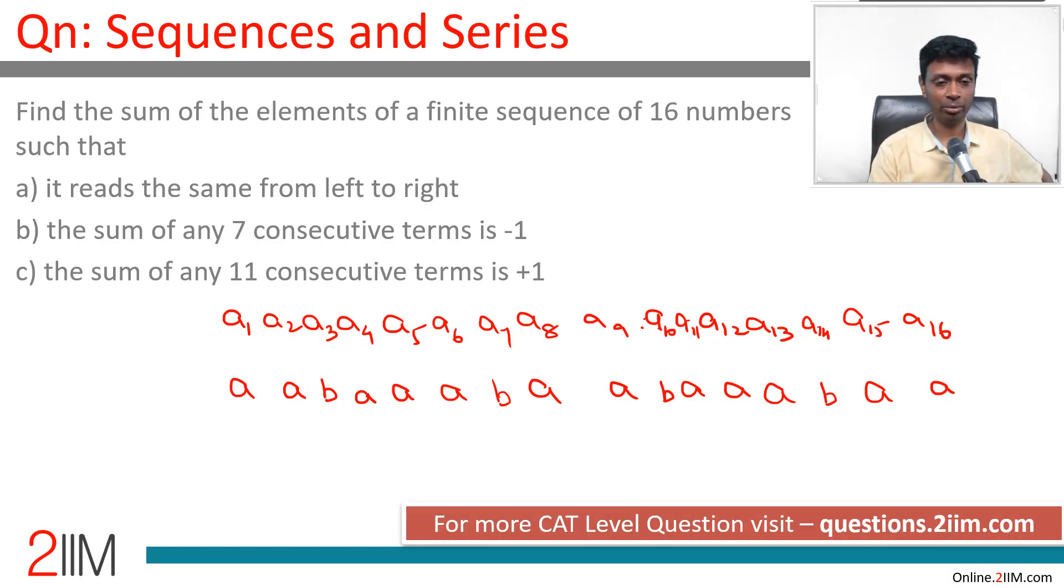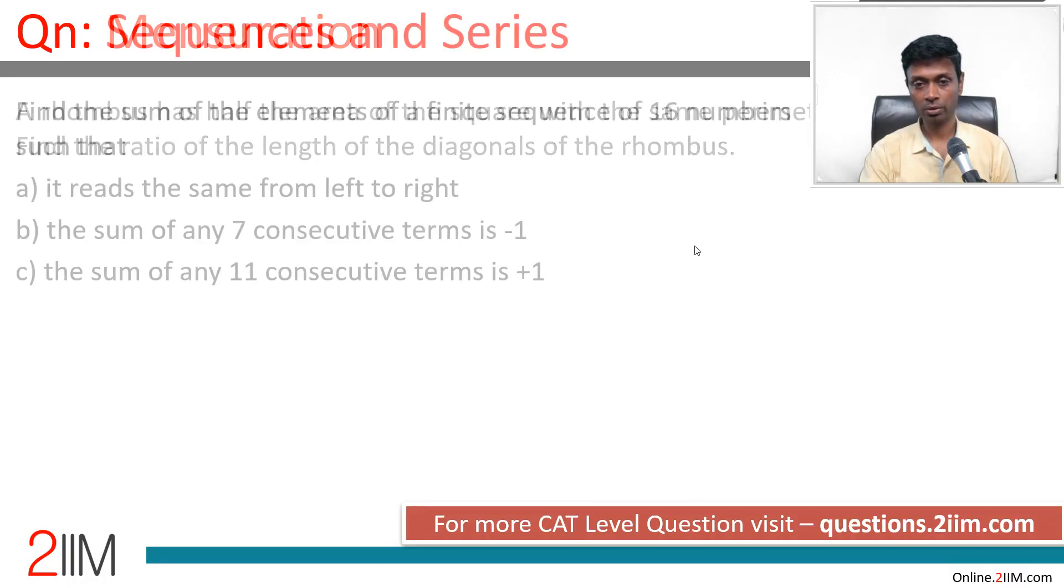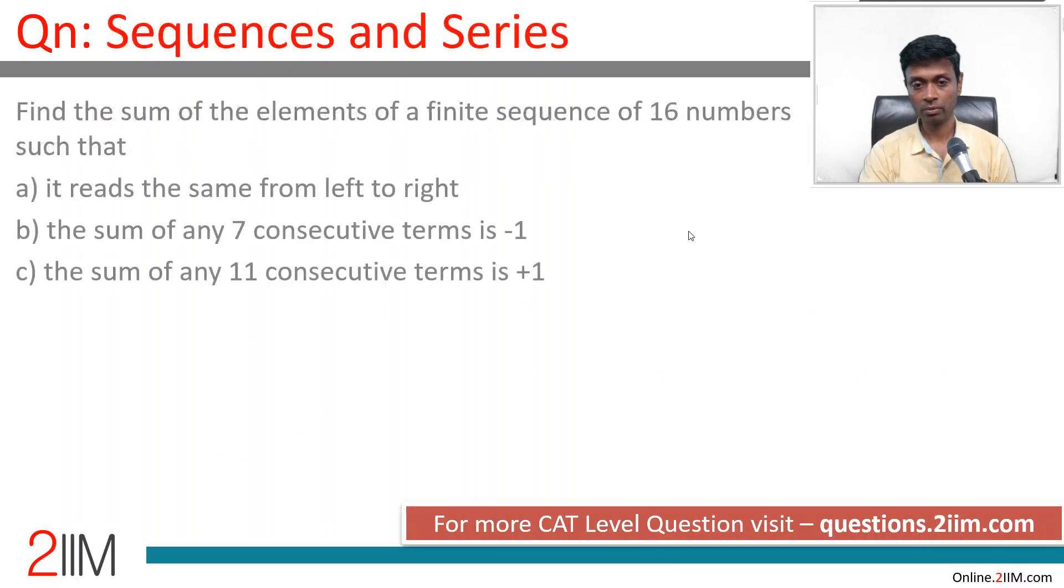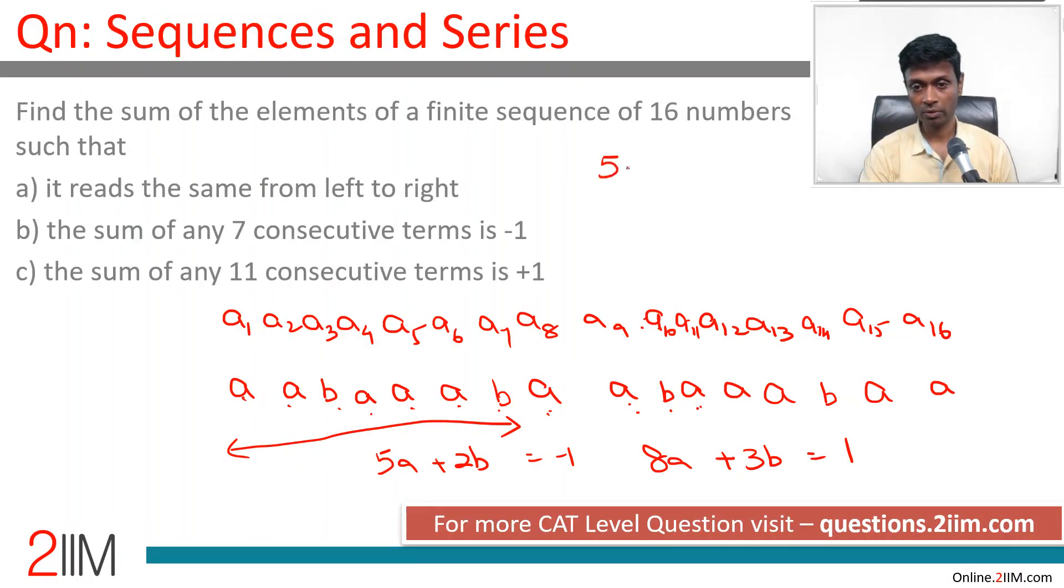Now what do we do? Very simple. Sum of any seven consecutive terms, that is this seven. So it is 5a plus 2b is minus 1. Eleven consecutive terms, to this we are adding this: 6a, 7a, 8a plus 3b. 8a plus 3b is 1. So let us write this down. 5a plus 2b is minus 1. 8a plus 3b is 1.